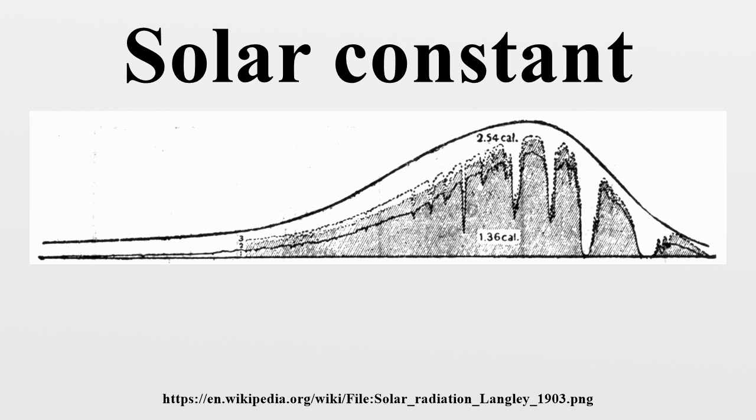at a distance of one astronomical unit from the sun. The solar constant includes all types of solar radiation, not just the visible light.